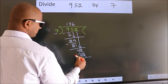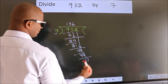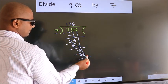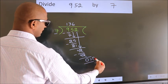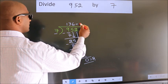Now we subtract. We get 0. No more numbers to bring down. So we stop here. This is our remainder. This is our quotient.